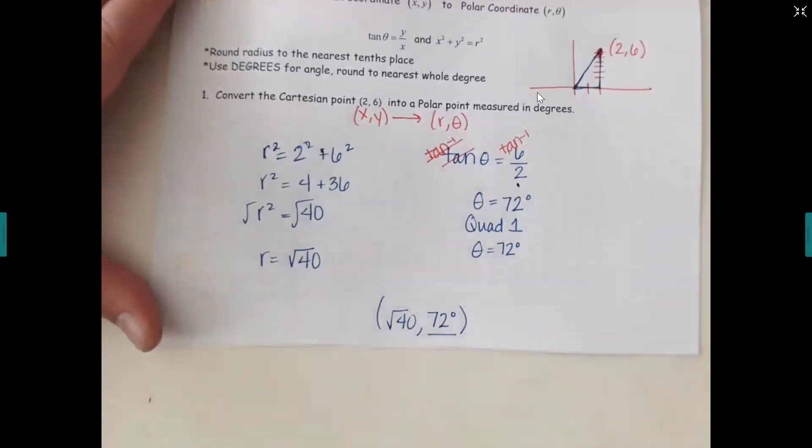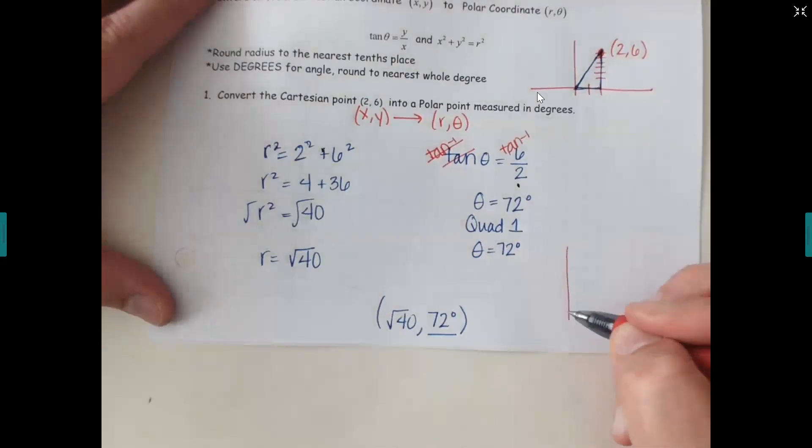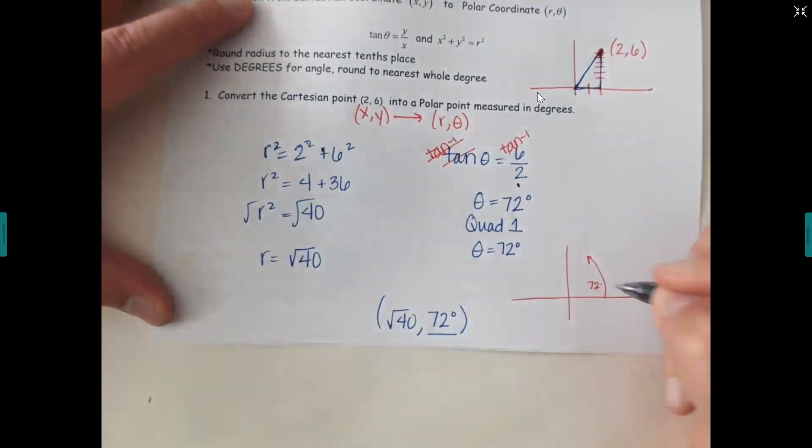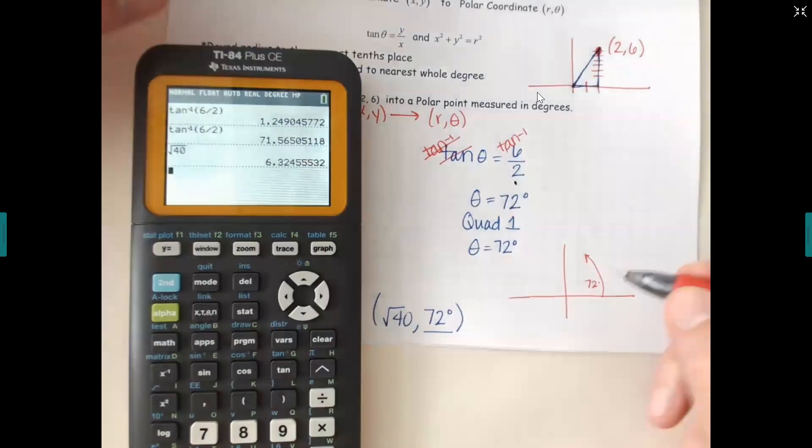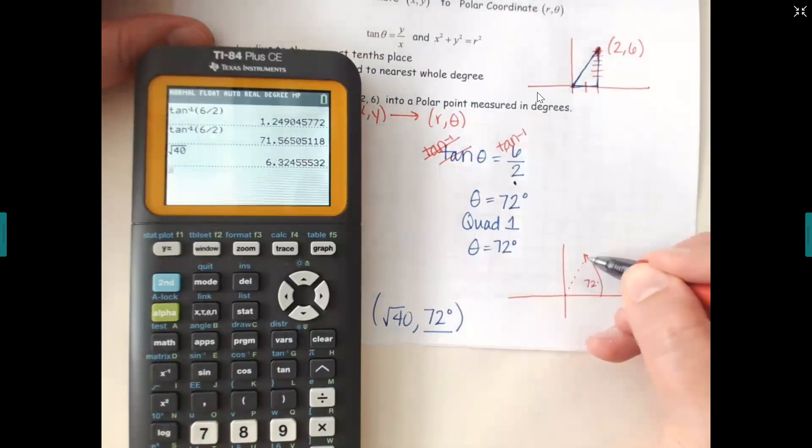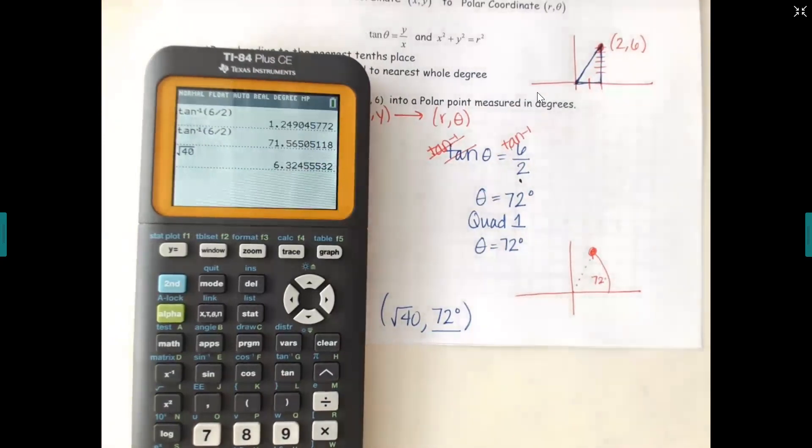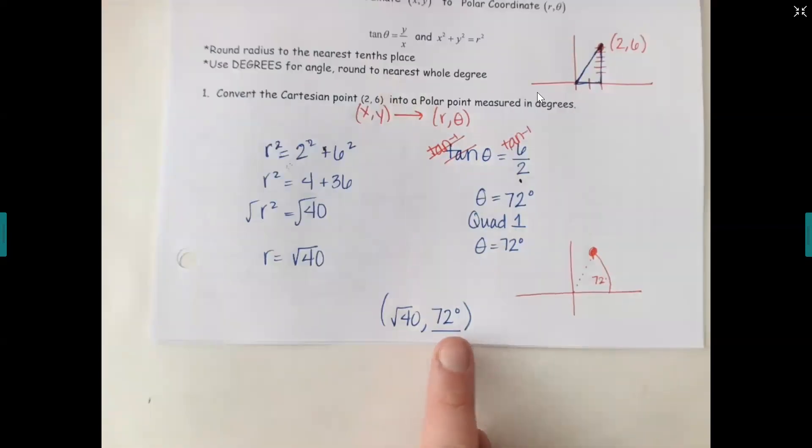If you got 1.24, you're in the wrong mode. Remember your mode, you want to be in degrees. So I got 71.5, we're going to round that to 72. But very important, remember with vectors, your first theta is not always your answer. It depends what quadrant you're in. What quadrant did my ordered pair end up in? Quadrant 1. And if you look right there, quadrant 1 means theta stays the same. So this is your final theta, still 72 degrees. For delta math, this would be your answer: root 40 comma 72.